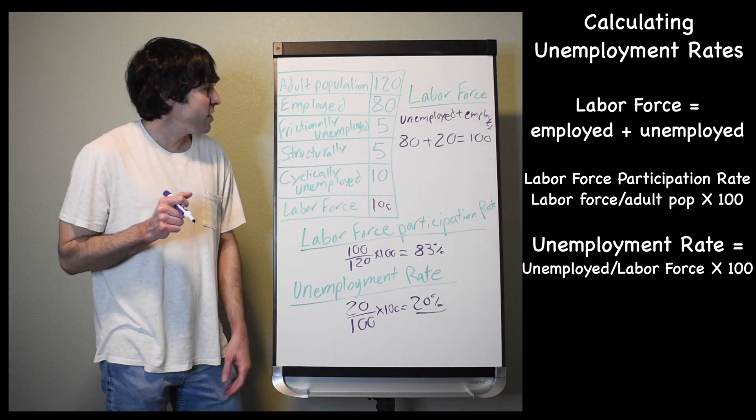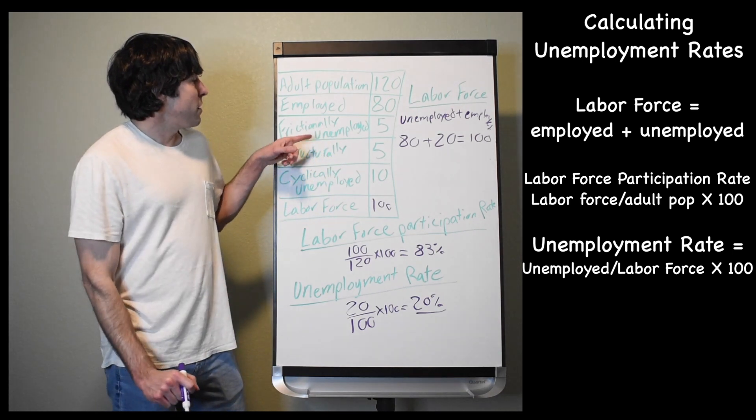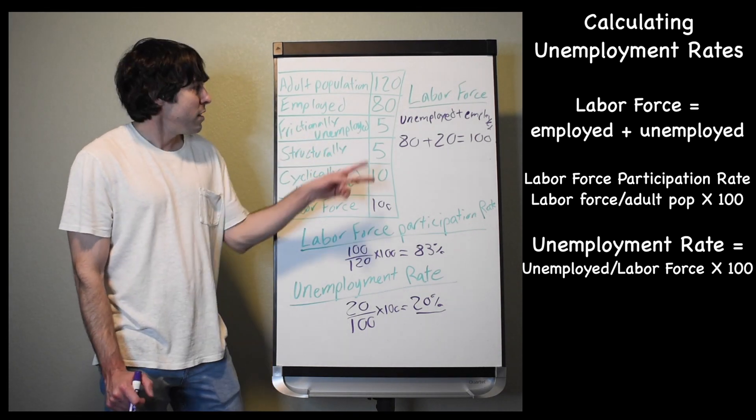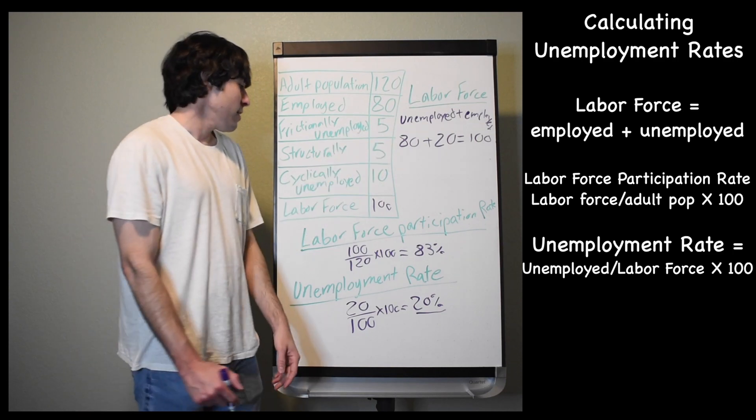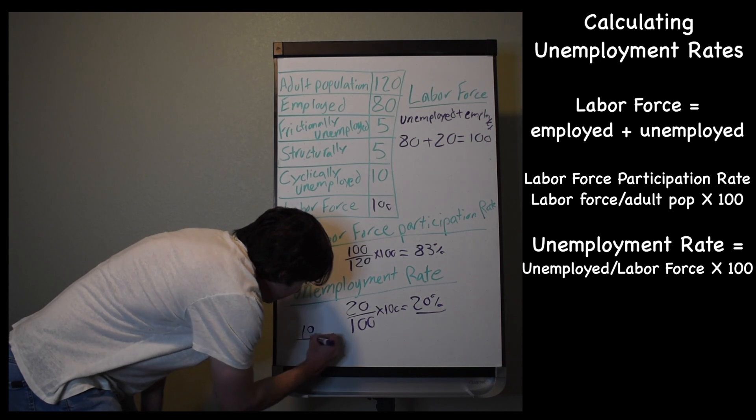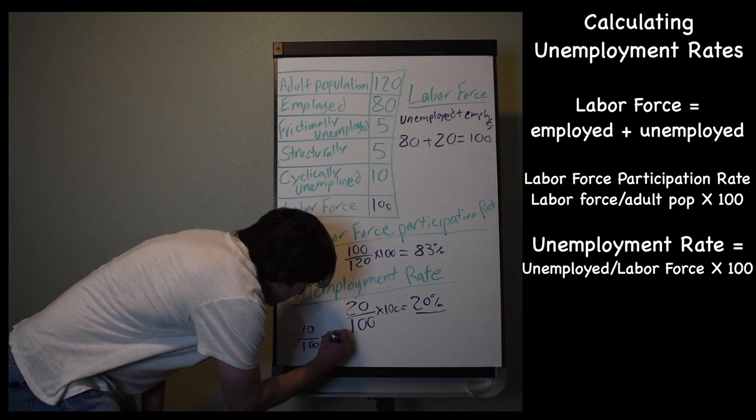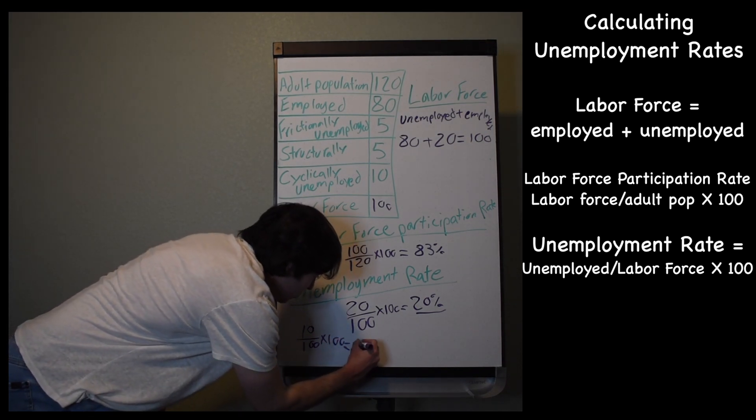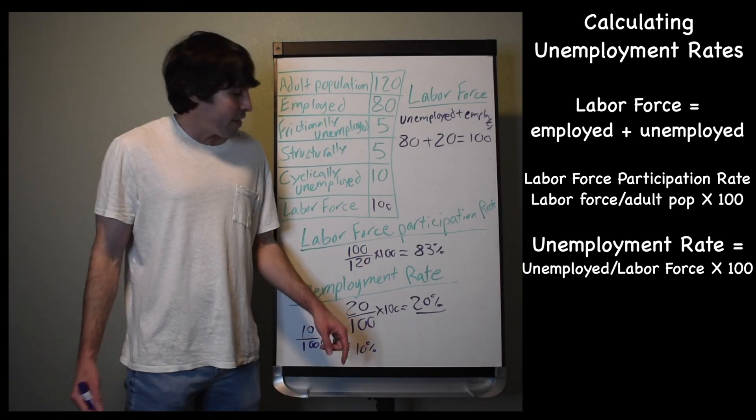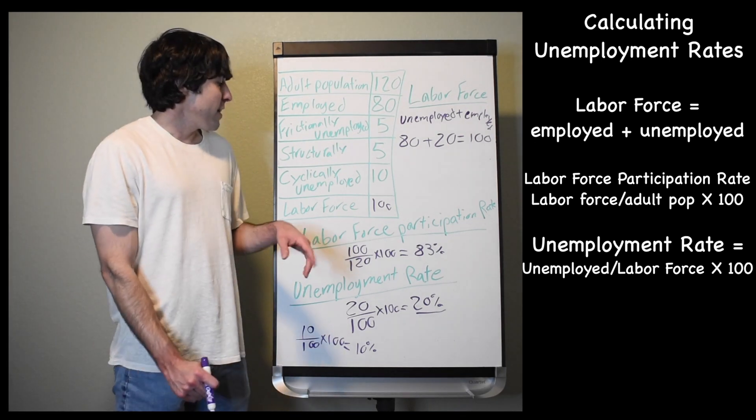And remember from the last video I taught you, the natural rate of unemployment is your frictionally unemployed plus your structurally unemployed. So in this country, it's 10. And so to find that, our natural rate of unemployment would be 10 divided by 100 times 100. And that's going to come out to 10%. So if I have a 10% natural unemployment rate and I have a 20% actual unemployment rate...